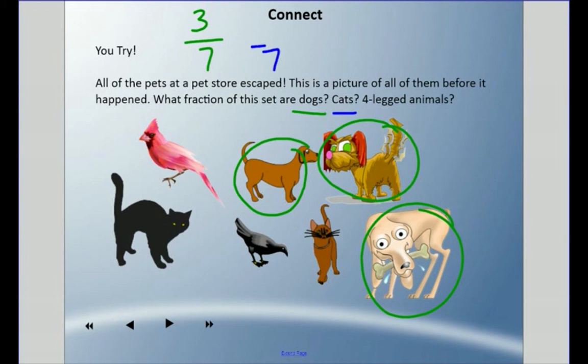And what about cats? Well, like I said, there are seven pets here—we're talking about sevenths here. I have one cat here, one cat here, so two-sevenths of these pets are cats.